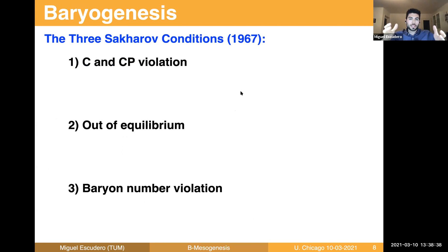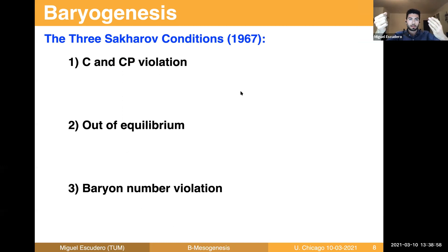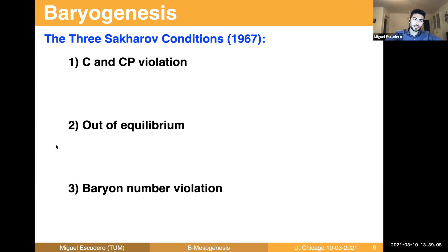Already in 1967, Sakharov outlined three conditions in order to explain a universe like the one we observe — one in which matter has dominated over antimatter. The first Sakharov condition is C and CP violation. If one wants to generate an excess of matter over antimatter in the early universe, the rate of producing particles and antiparticles needs to be different. In addition, one needs to be out of thermal equilibrium, because in thermal equilibrium the number of particles and antiparticles is the same, so it's impossible to generate an asymmetry. And finally, if the excess is of baryons, then one needs baryon number violating interactions.